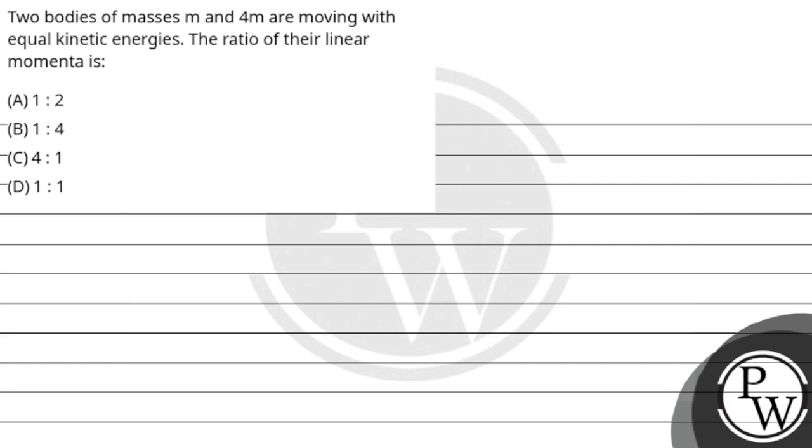Hello Bacho! Let's see this question. Two bodies of masses m and 4m are moving with equal kinetic energies. The ratio of their linear momentum is: